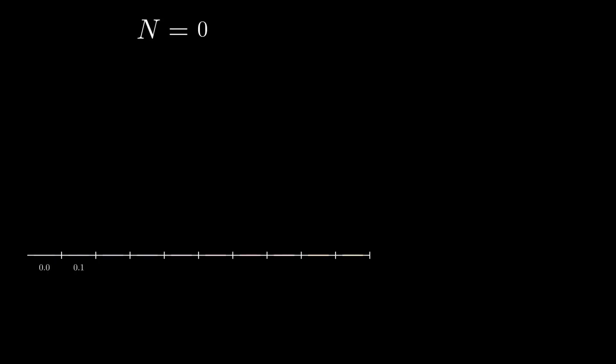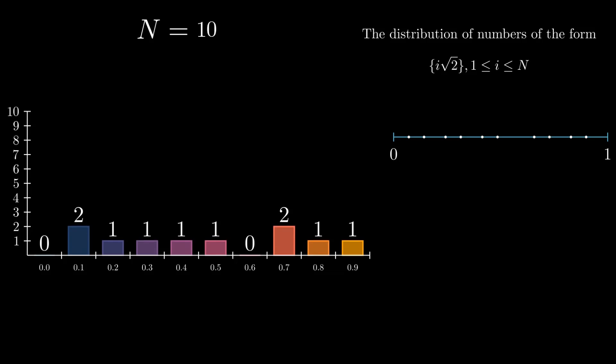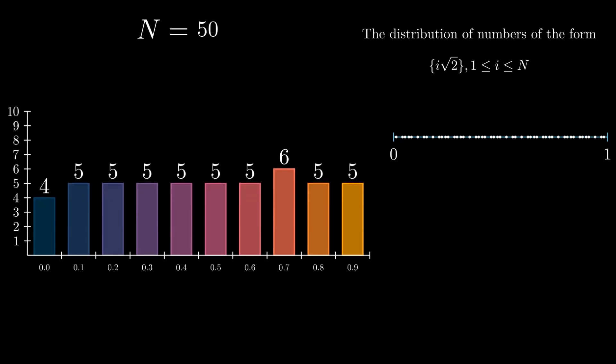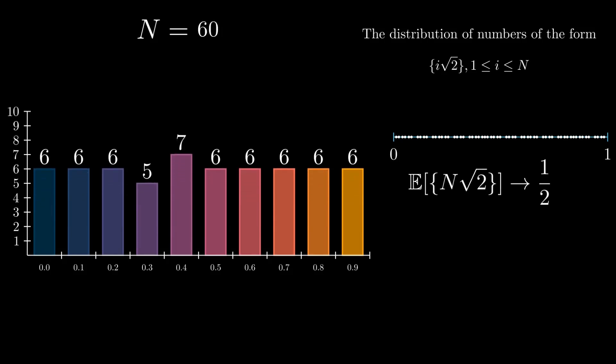Let's look at the distribution of our value in the range from 0 to 1 with a different number of balls. As we can see, this value has an equidistribution, which means that the mathematical expectation of our value tends to 1/2.